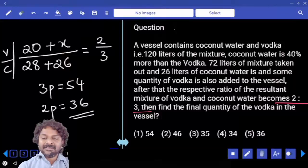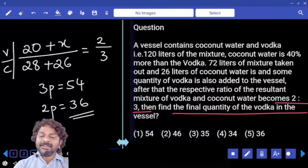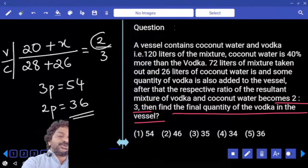And this is what your question asks. Final quantity of vodka in the mixer is 36 liters.